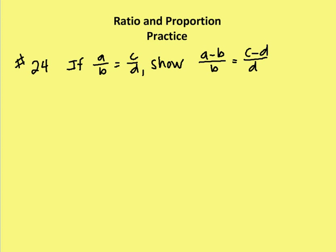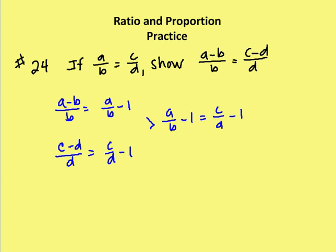Well, this is similar to a problem we had in the lesson portion on ratio and proportion. And what we're going to do is we're going to simplify or rewrite the left and right hand side of the equation to show that both values are going to be similar. So I can rewrite A minus B over B as A over B minus 1 or A over B minus B over B.